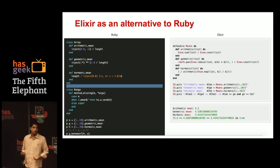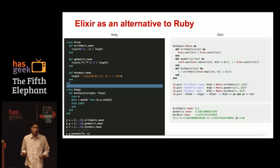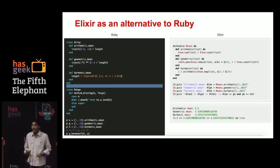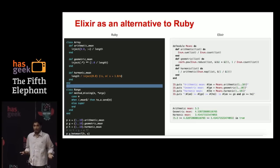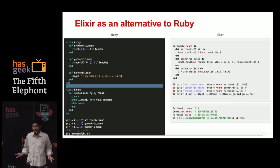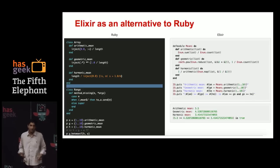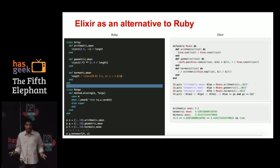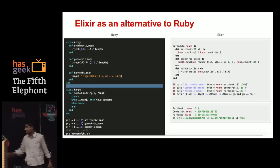For lazy operations, you can use the Stream module. Ruby has an excellent Enumerable module — if you've programmed in Ruby it's very intuitive — and Elixir has copied that approach. So the same style carries over into Elixir.